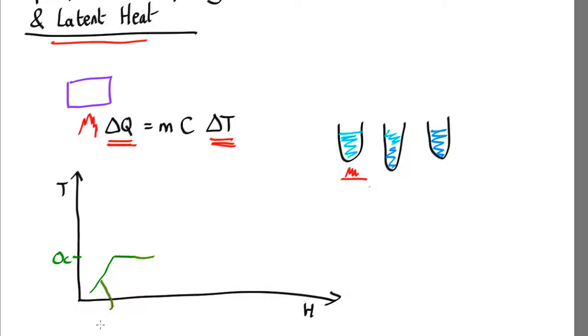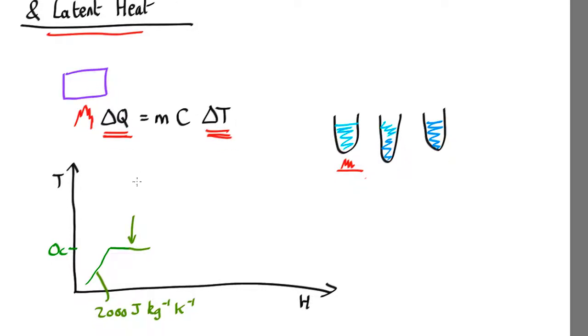To heat up ice it takes about 2,000 joules per kilogram per Kelvin. But the latent heat—this is called the latent heat—the amount needed to turn one kilogram of ice into one kilogram of water is a whopping 334,000 joules.